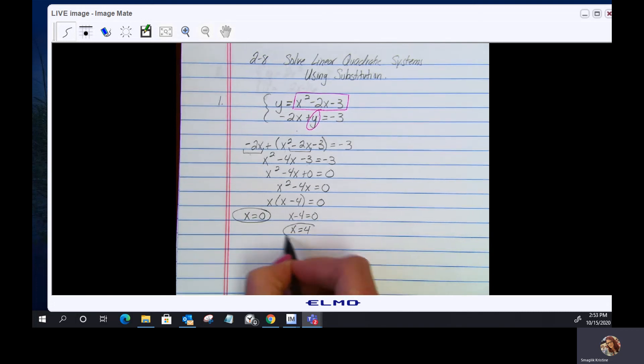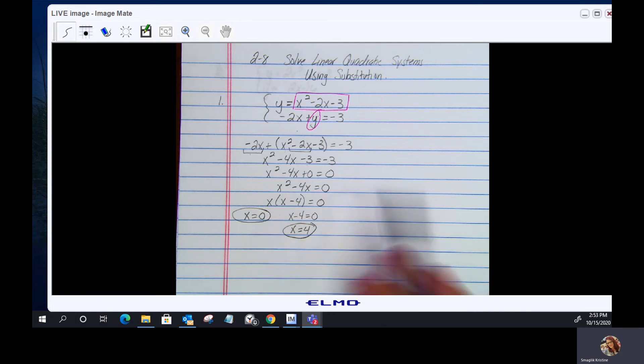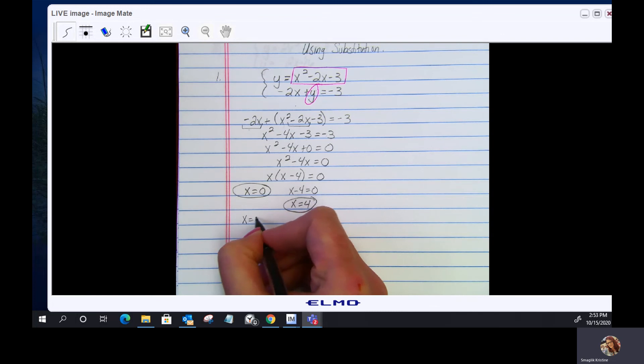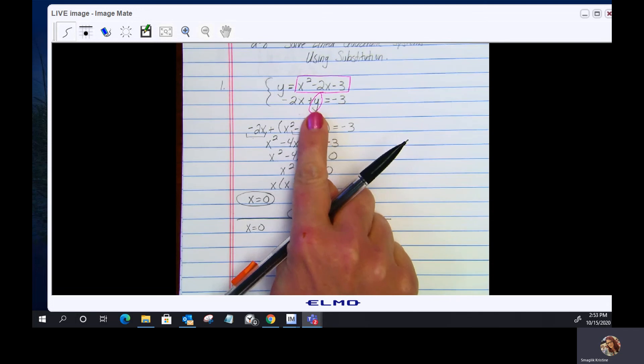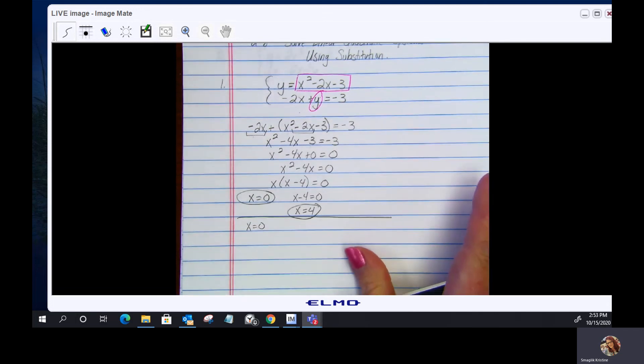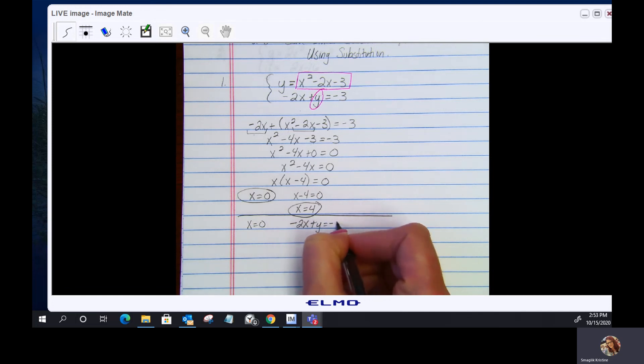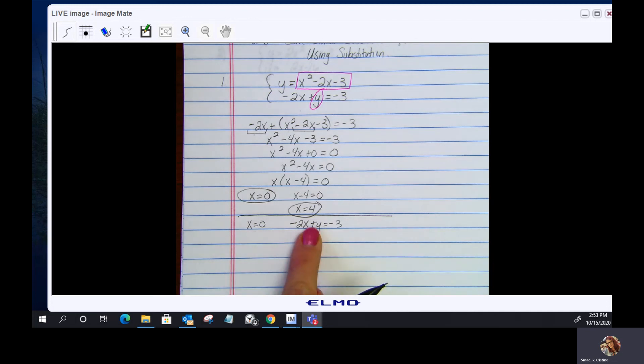So here's my x values. I'm going to have two different solutions. I need to find the corresponding y values. So what I'm going to do, let's see, let's do x equals 0. We'll start there. And for the easiest equation, I'm going to grab the linear. So if I grab the linear, let me just jot that down. Negative 2x plus y equals negative 3. So now let's substitute the x in here.